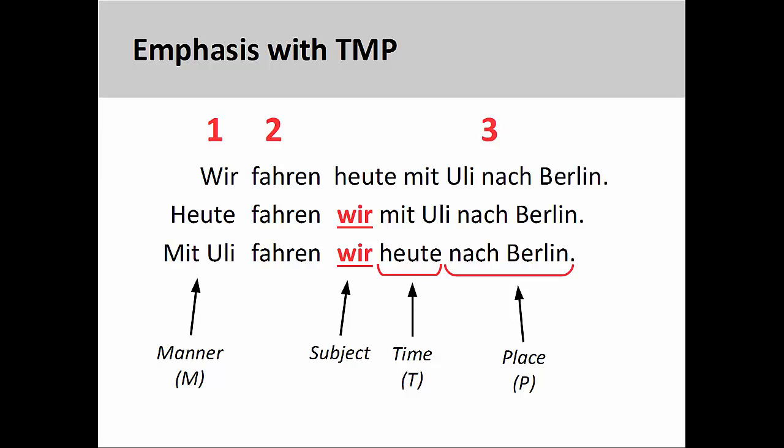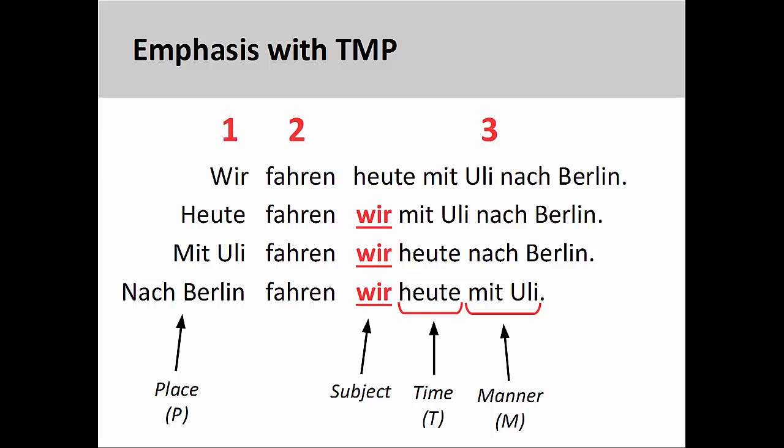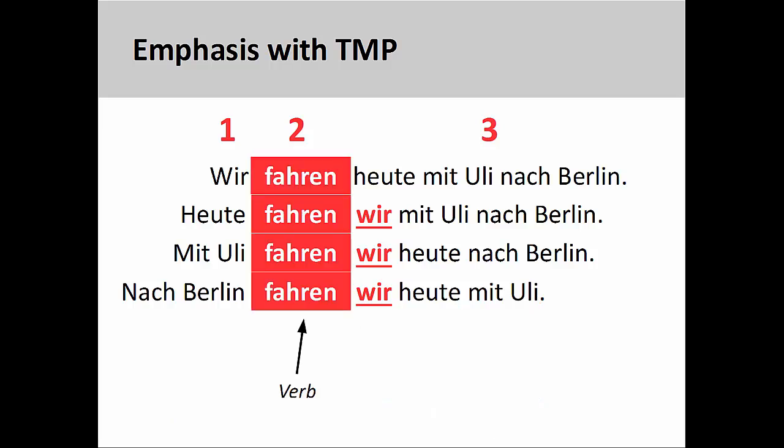Less common, although possible, is to place the manner element in the first position. As before, the other time and place elements remain in the third position in the regular order, and the subject of the sentence again appears immediately after the verb. It is also possible for the place element to appear in the first position; the time and manner elements remain in the third position in the regular order, and the subject again appears immediately after the verb. Yet, regardless of what element appears in the first position, the verb can always be found, at least in statements, in the second position.